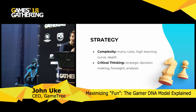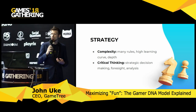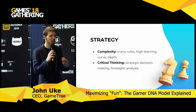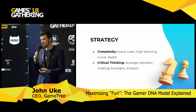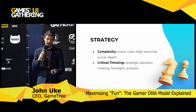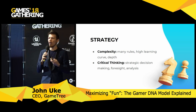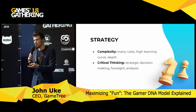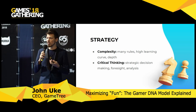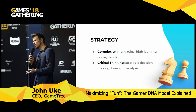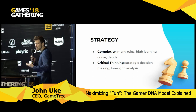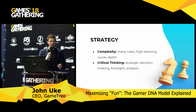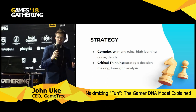Next is strategy. Strategy has complexity — many rules, a high learning curve, a lot of depth. Complex games are like the Paradox games, Europa Universalis or Total War. Some people really like complexity; others hate it. Critical thinking combined with complexity makes strategy — it's more about strategic decisions and foresight analysis. An example of a game with a lot of critical thinking but not much complexity would be chess, where there's a lot of strategy but not a lot of complexity. These don't always exist together, but commonly they do.